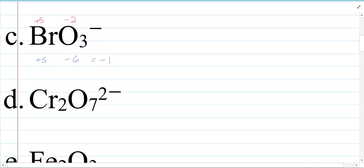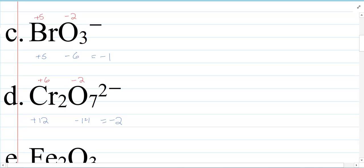Dichromate. We add up to negative two. Well, who do we start with? We start with oxygen. Oxygen is minus two. And there are seven of them. So that is a minus 14. So underneath chromium, it has to be a plus 12, doesn't it? And since there's two chromiums, that means we are plus six. That's chromium six in dichromate.